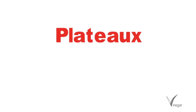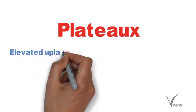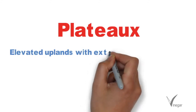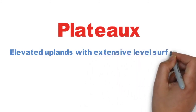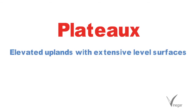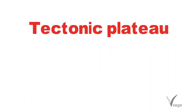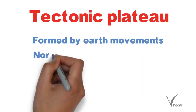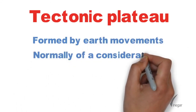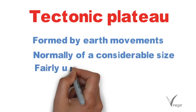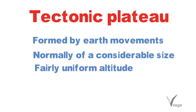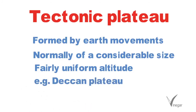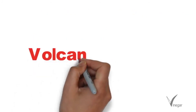Now let's talk about different types of plateau. Plateaus are elevated uplands which have extensive level surfaces and they steeply descend towards the nearby lowlands. The first type is the tectonic plateau, formed by the movement of the Earth. Due to Earth's movement, land gets uplifted over a considerable area and its altitude remains quite uniform. An example is the Deccan Plateau in India.